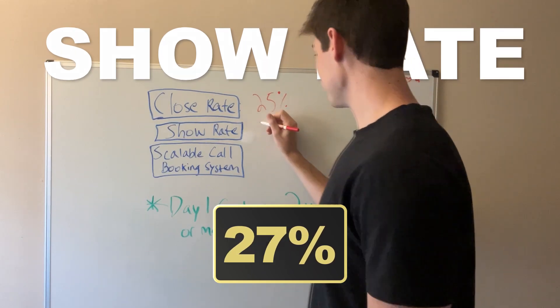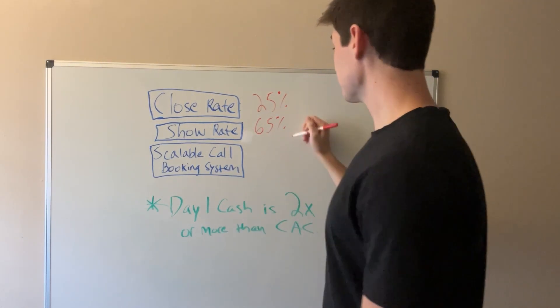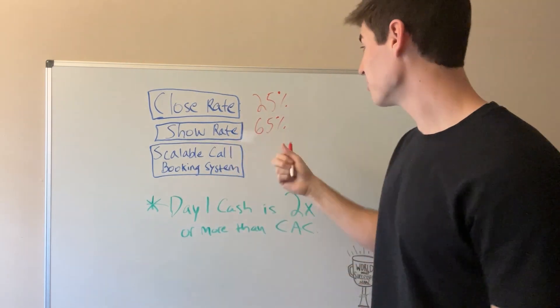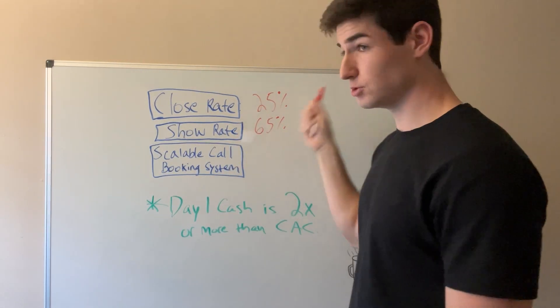Show rate, this is at least 65%. These can be better, by the way. They don't have to be this bad. They can be better. The higher, the better, of course. But these are bare minimum to scale.